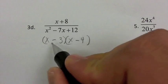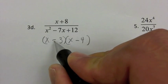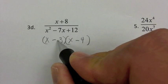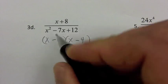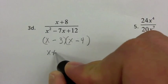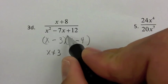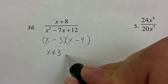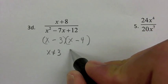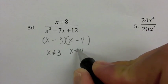Now that I've factored, it's easy to figure out which values we want to avoid. We don't want x equals 3, because if I put x equals 3 in there, I get zero in the denominator. And I also don't want x equals 4.